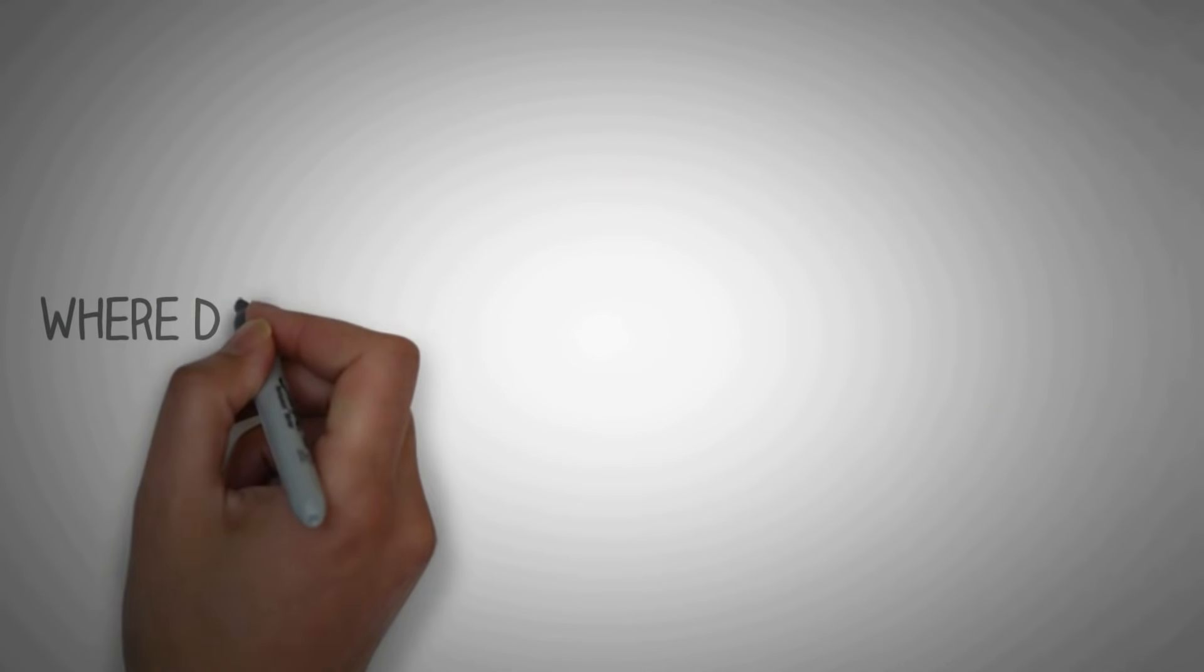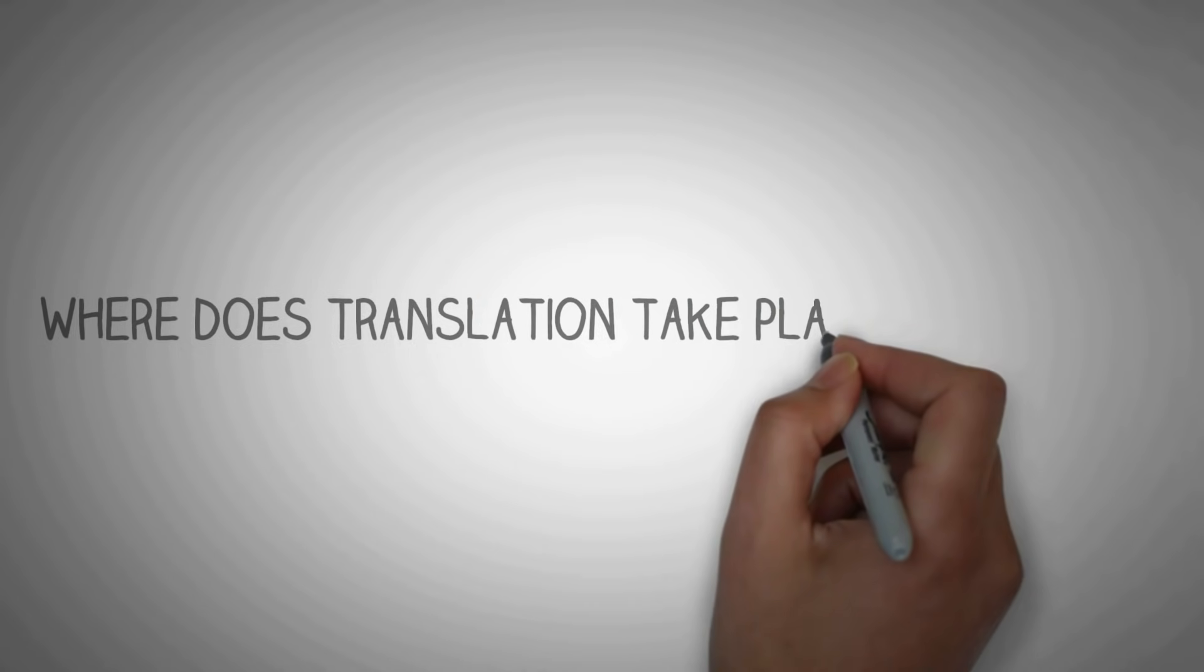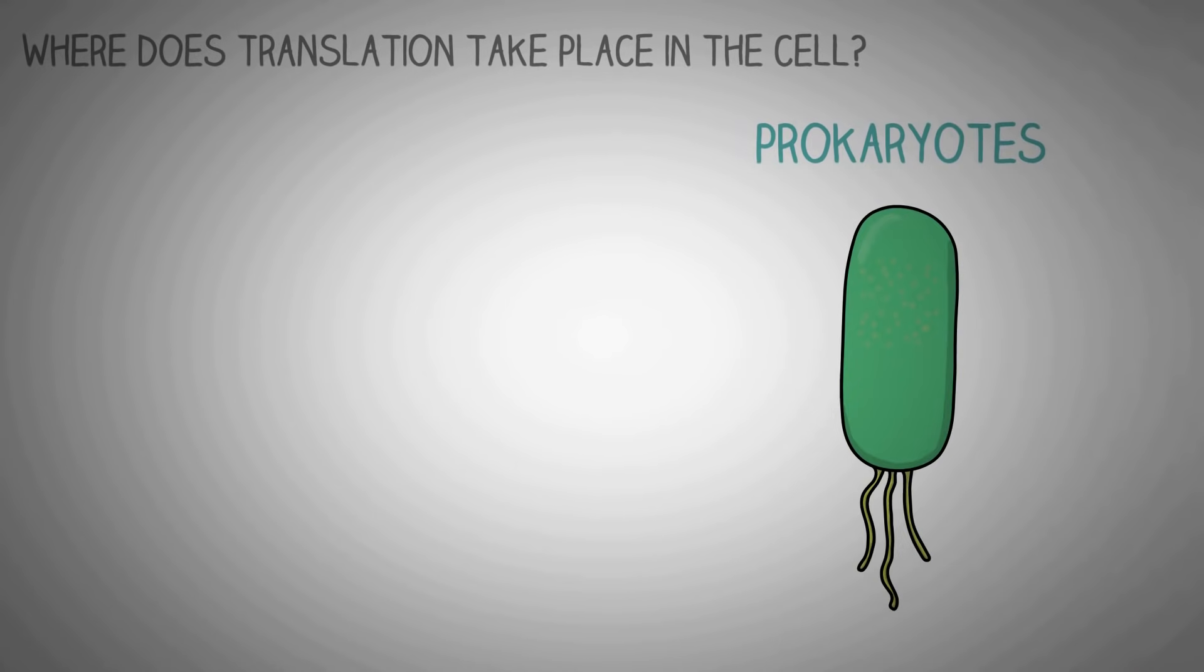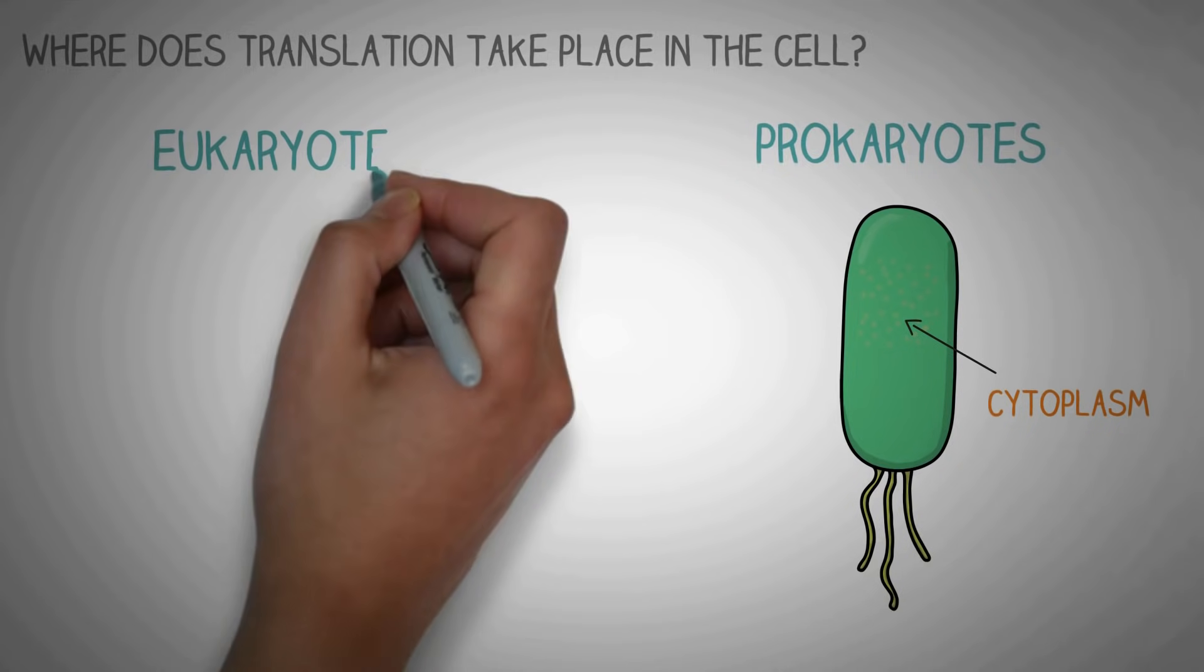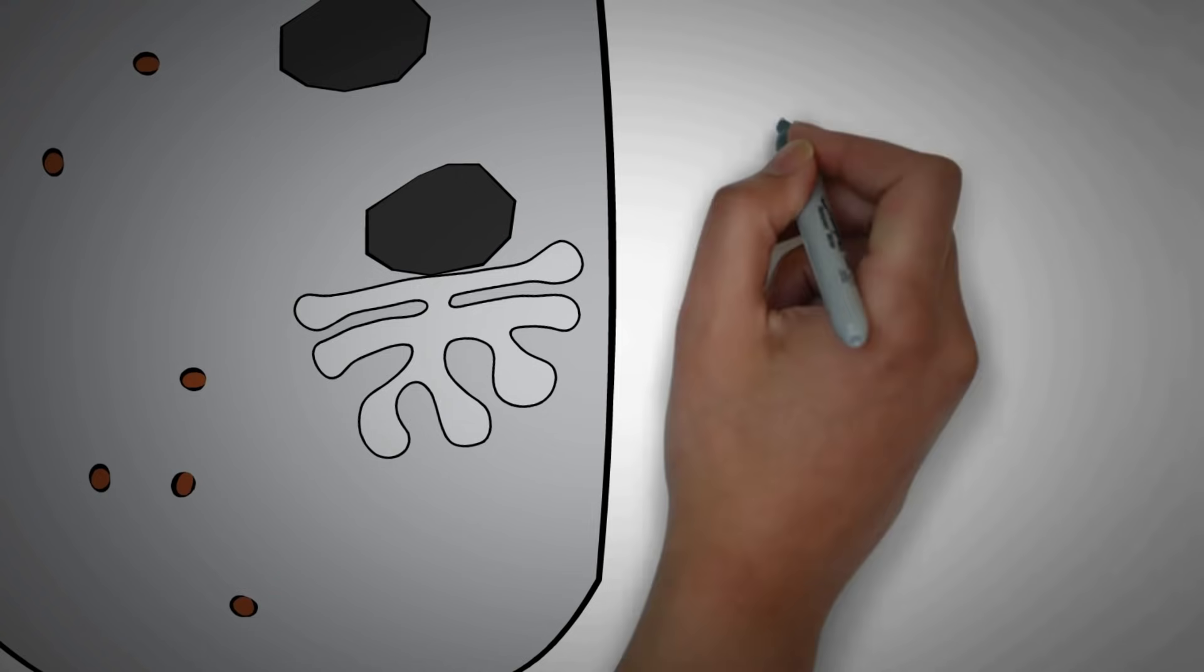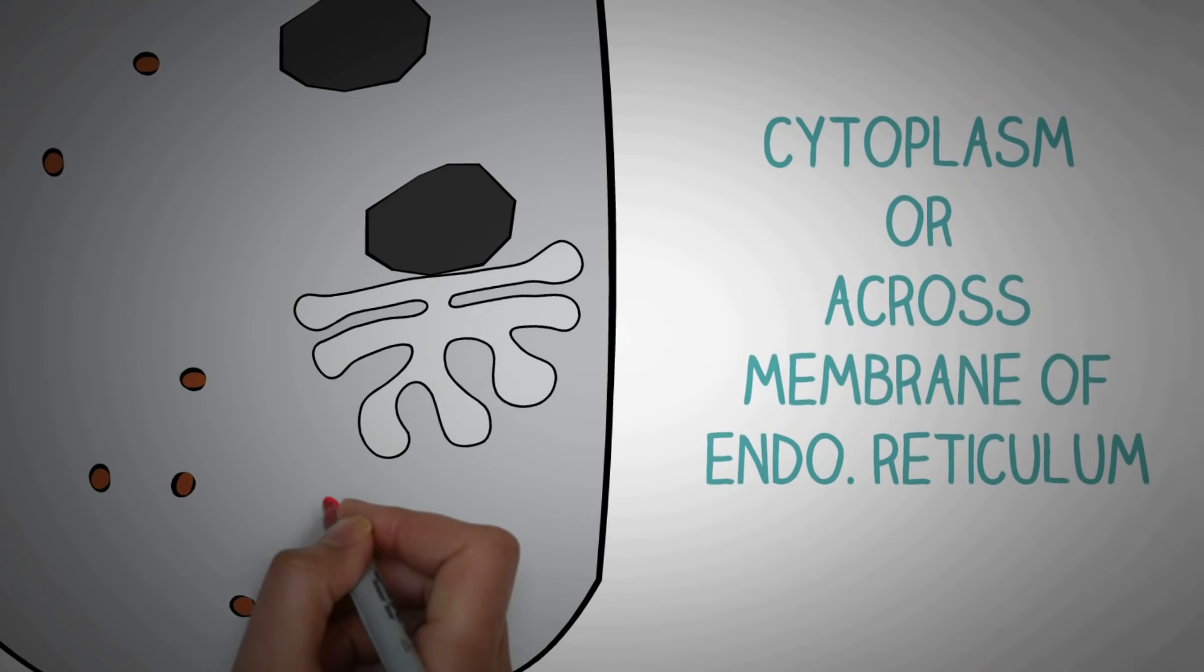Now let's look at where this process takes place in the cell. It's slightly different for eukaryotes and prokaryotes. In prokaryotes, the translation takes place in the cytoplasm. In eukaryotes, the translation occurs in the cytoplasm or across the membrane of the endoplasmic reticulum.